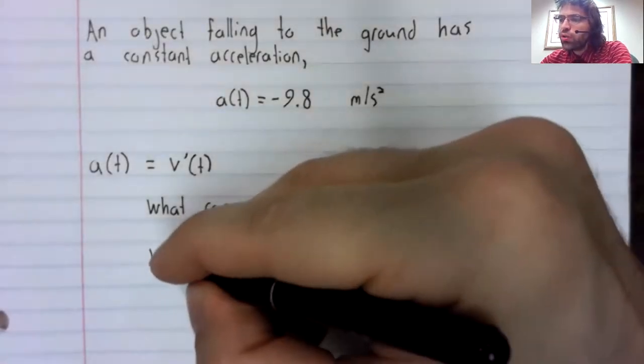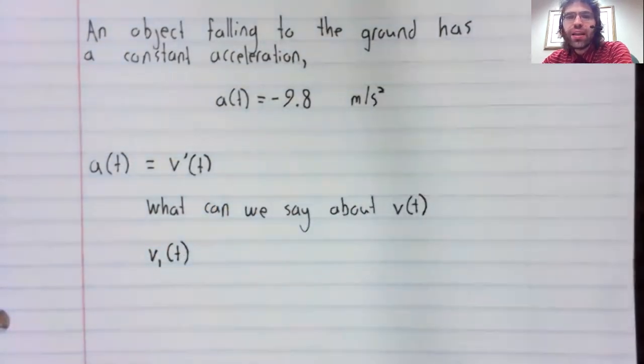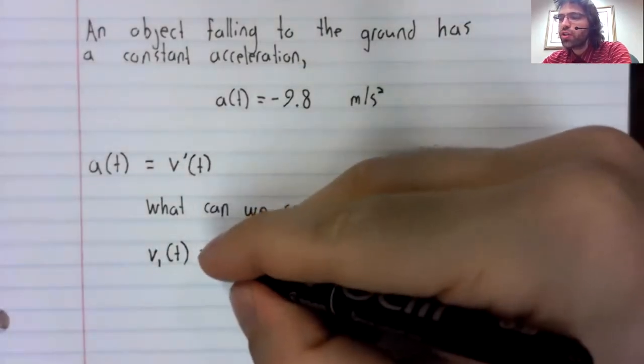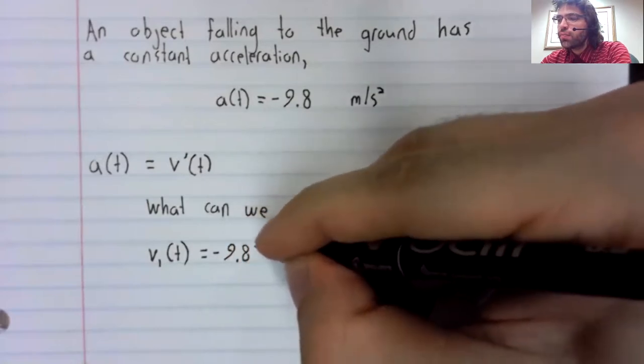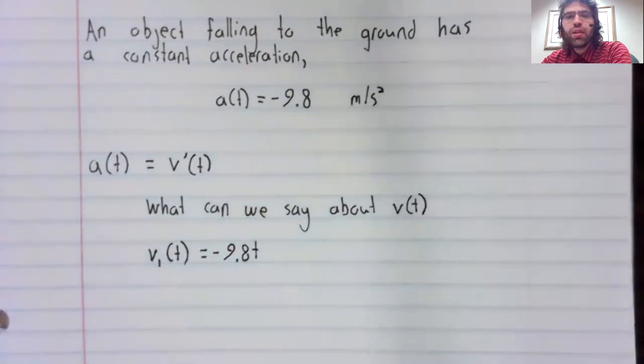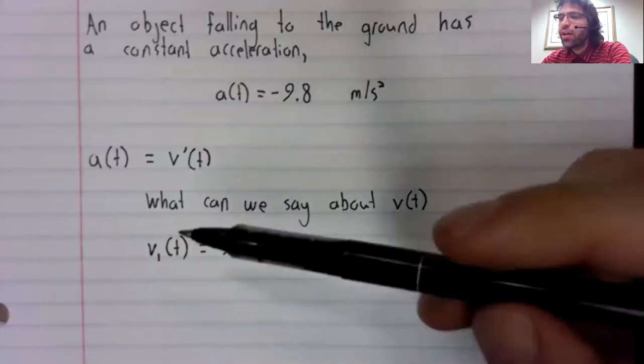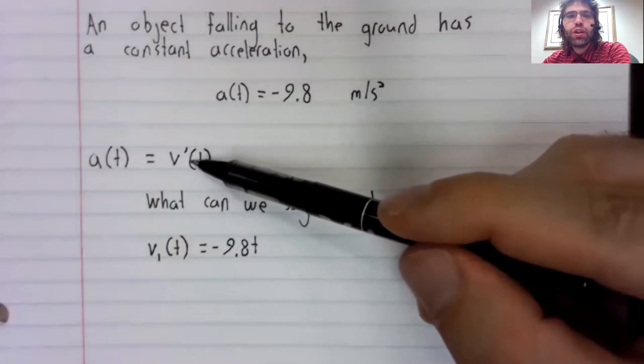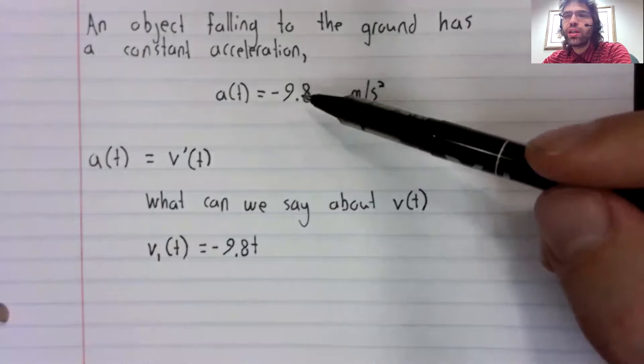Well, suppose we recognize that a possible velocity function is negative 9.8 times t. This function has the property that if we take its derivative, we get negative 9.8.